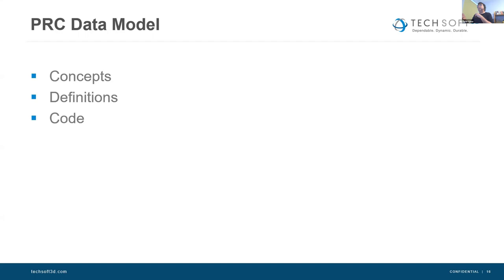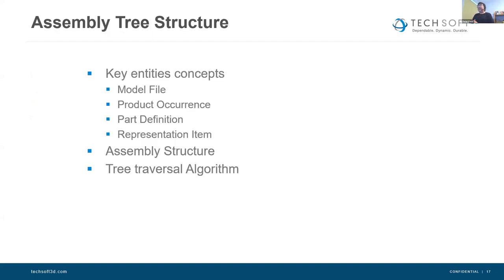Going into a bit more detail on the PRC data model — at the assembly tree level, the root is the model file, and then we have the product occurrence, part definitions, and representation items. I'll describe what we mean by these. I'm going to talk about getting the data out — leading down to the part definitions and representation items, which is where you get the BREP and tessellation from. And finally, I'll talk about a tree traversal algorithm to make it easier to walk through that data and get it in the correct way.